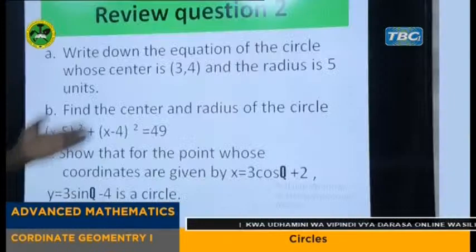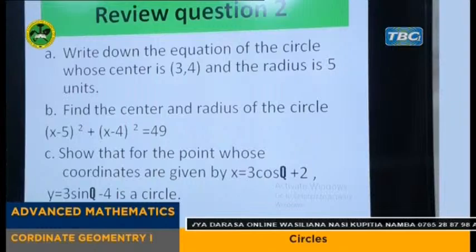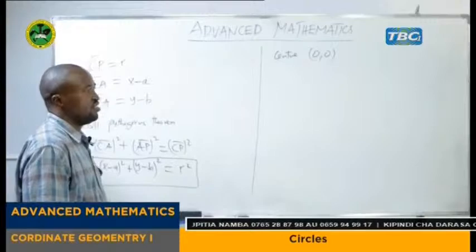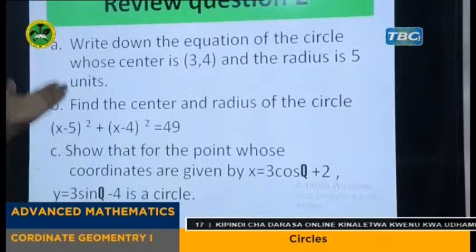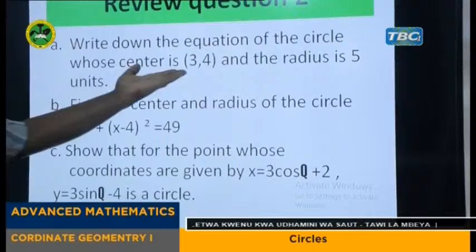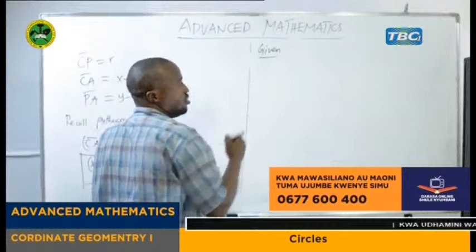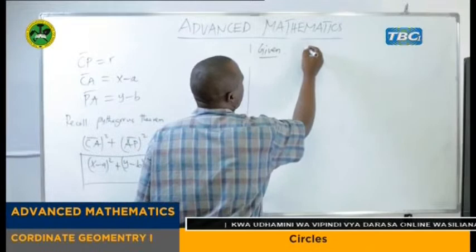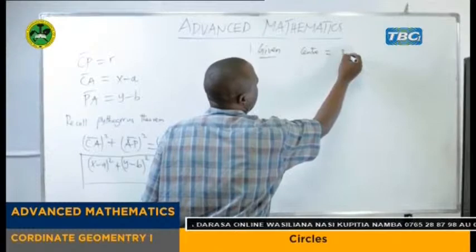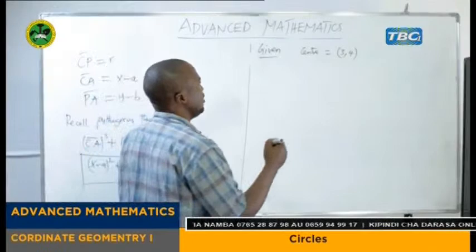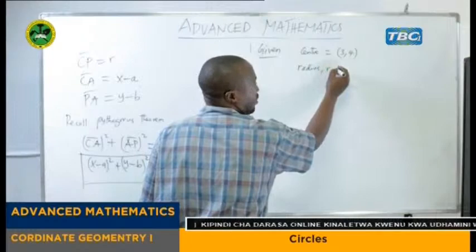So my dear students, let us proceed with the review questions that are going to use our general equation of the circle in which the center is not at the origin. We have question number 2A: write down the equation of the circle whose center is (3, 4) and the radius is equal to 5 units. So in this equation, we have been given the coordinate of the center, that is (3, 4). And again we have the radius r equal to 5.